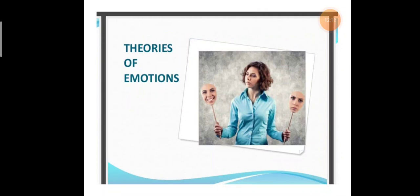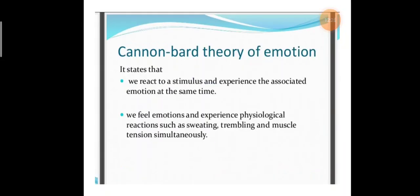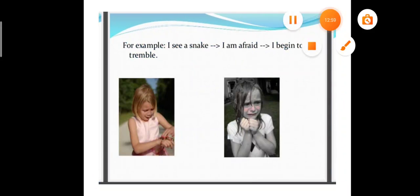Theory of Emotions - Cannon-Bard Theory of Emotion. It states that we react to a stimulus and experience the associated emotions at the same time. We feel emotions and experience physiological reaction such as sweating, trembling and muscle tension simultaneously. For example, I see a snake, I am afraid and I begin to tremble.